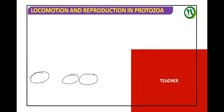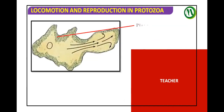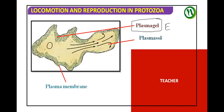This is the Sol-gel theory of amoeboid movement. We have very little information to cover here — we are not going to learn it in detail. Just we need to know what is gel and what is Sol: plasma gel and plasma Sol. In general, we consider ectoplasm as plasma gel and endoplasm as plasma Sol.